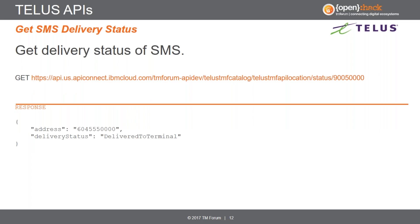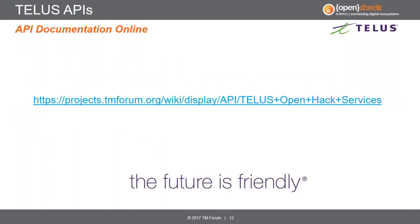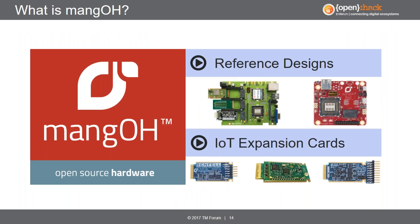The corresponding final service we're providing as part of this hackathon is to retrieve the delivery status of an SMS message. This is a simple GET request where the parameter you provide is the correlator from the message you delivered, and a successful response will return the number you delivered it to as well as the delivery status. We're providing a sampling of RESTful APIs. If you're interested in more details, particularly on the day you're participating, we have a full set of API instructions at the TM Forum OpenHack wiki page. I'll hand off to Ashish, who will talk about the Mango platform.